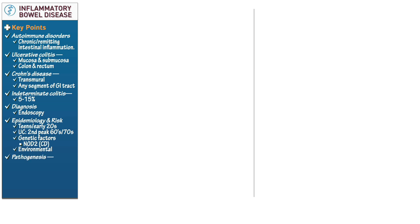As autoimmune disorders, the pathogenesis of ulcerative colitis and Crohn's disease have much in common. They are the result of detrimental interactions between the host immune response, intestinal microbiota, and intestinal barrier defects. However, there are key differences in the pathogenesis of the two disorders.